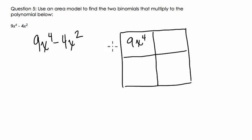If I put 9x to the 4th in this region and minus 4x squared here, I can quickly look at the factors to see what's happening. I know 3x squared times 3x squared is 9x to the 4th. So far it checks out. I also know that negative 2x times positive 2x is negative 4x squared. And this is actually the answer to the problem.